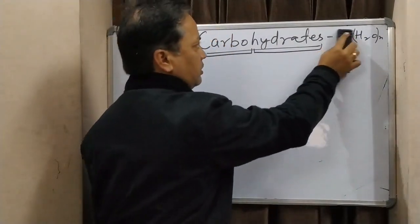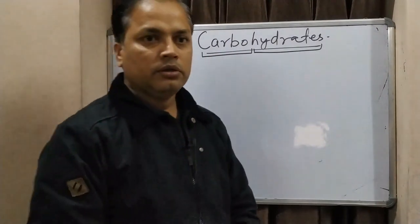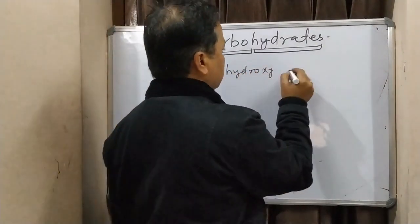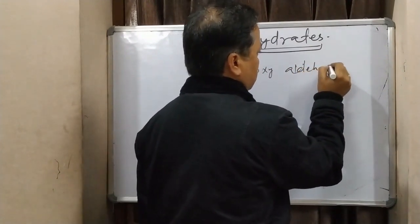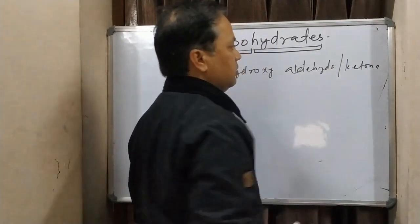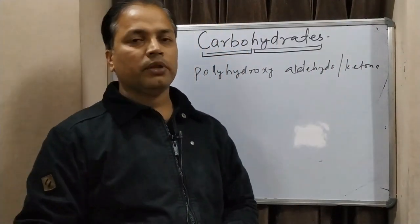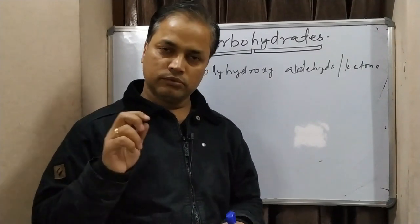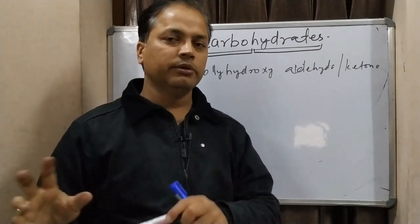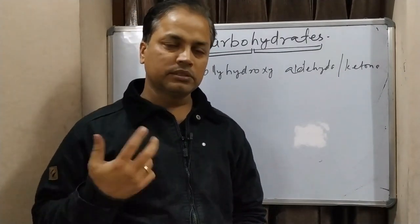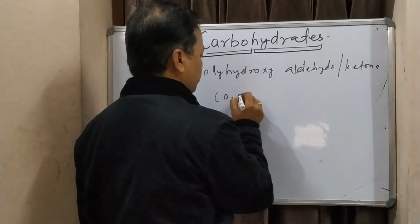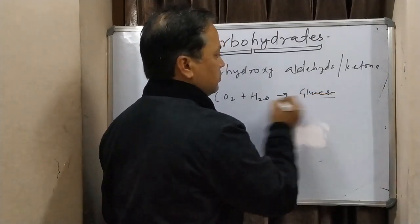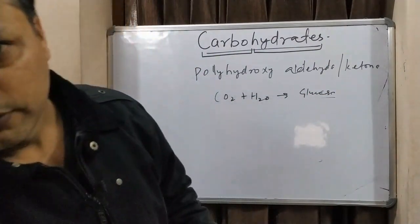So exactly we cannot call all carbohydrates following the Cₙ(H₂O)ₙ rule. The correct definition is: carbohydrates are polyhydroxy aldehydes or ketones. The ultimate source of all carbohydrates is plants — whatever carbohydrates we get, we get from plants. Plants synthesize carbohydrates from carbon dioxide through photosynthesis in the presence of chlorophyll and sunlight, producing glucose.